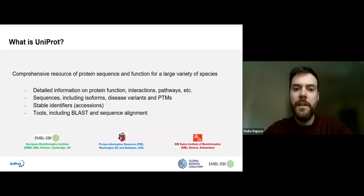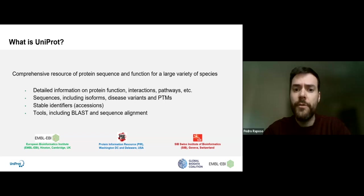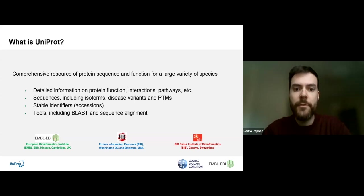To start with, UniProt is the world's leading high quality and freely accessible resource of protein sequence and functional information. It has reliable data as we have teams of expert curators reviewing literature in order to describe what proteins do. UniProt is a massive resource because it currently has a quarter of a billion proteins that cover more than two million different taxa. We provide information on protein function, interactions, pathways, and we also provide protein sequences alongside their stable identifiers.